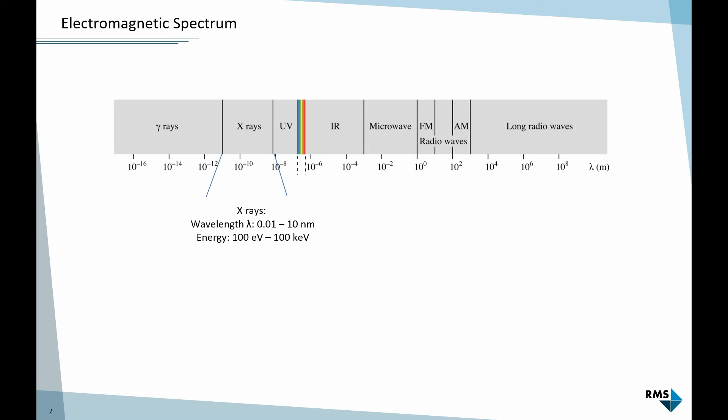Sometimes the distinction to gamma rays, which are even lower wavelength radiation, is not so clear. Sometimes they call X-rays up to 1 mega electron volt, but that's just a common definition. X-ray diffraction is an interference phenomenon — it's interference of X-rays. The interatomic distances in crystalline structures are in the same range as the wavelength, typically between 0.15 and 0.4 nanometers, and this is important to generate interference.